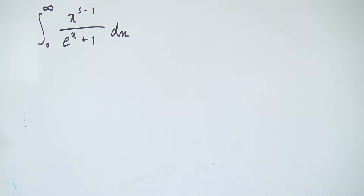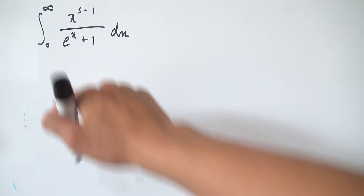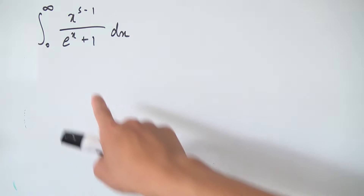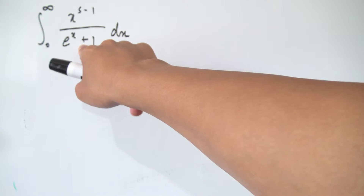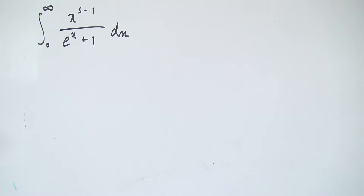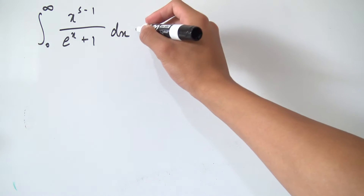Alright, hello everybody. Today we're going to be looking at one of the integral representations for the Dirichlet eta function. If you've seen my previous video on the integral representation of the Riemann zeta function, you'll notice that this integral right here looks very familiar — all I've really done is changed the negative into a positive, which is one of the key differences between the eta and zeta functions in terms of their integral representations.